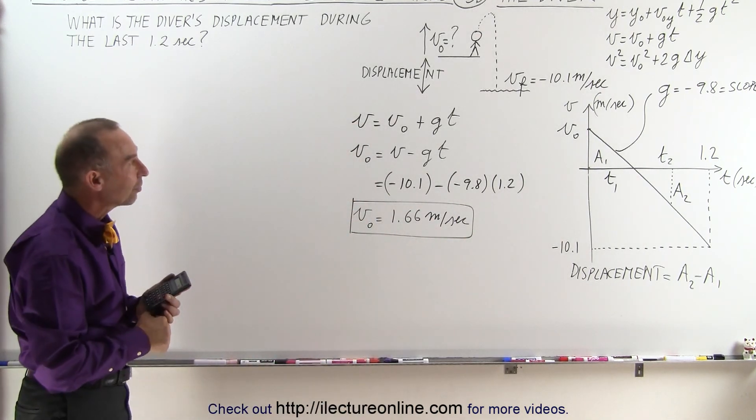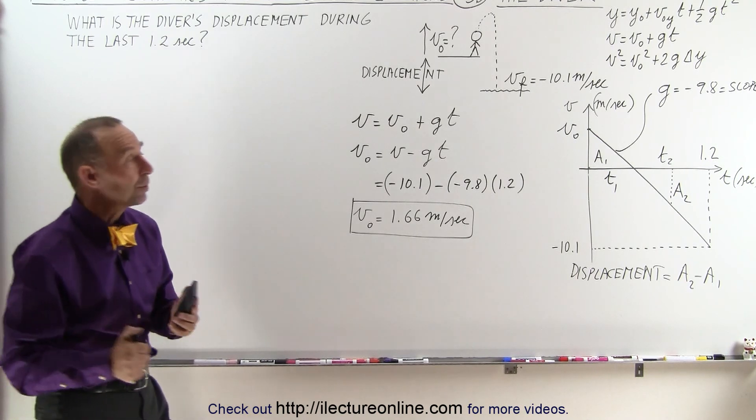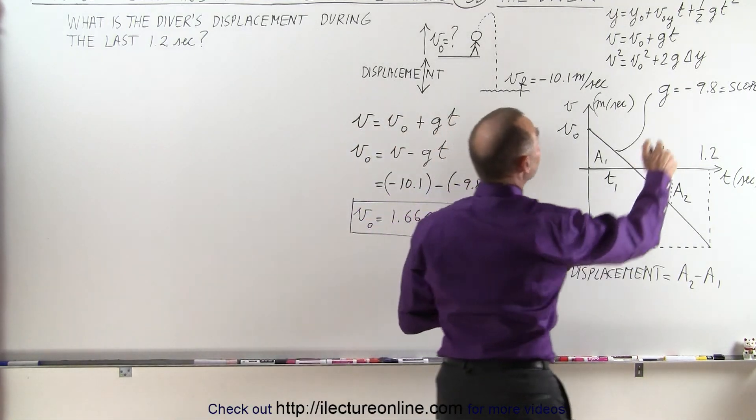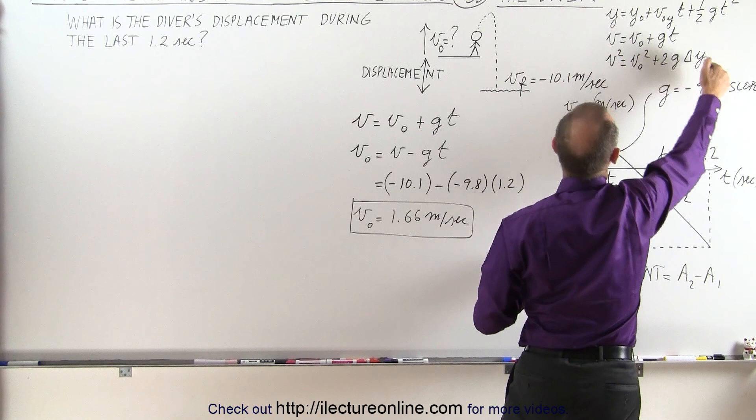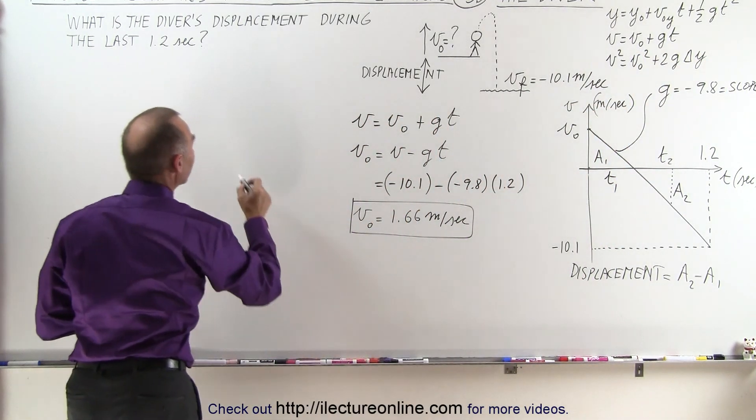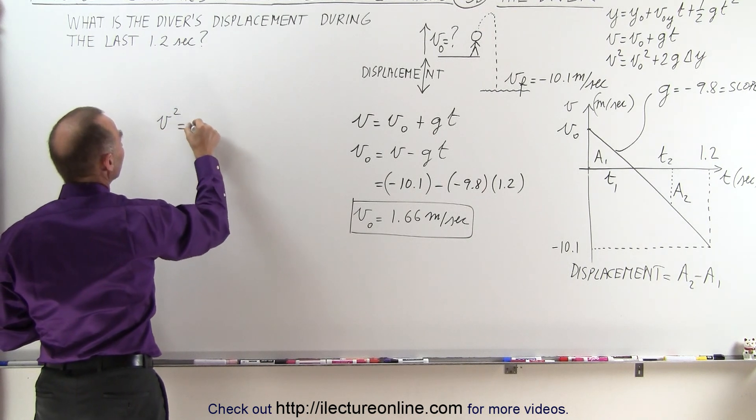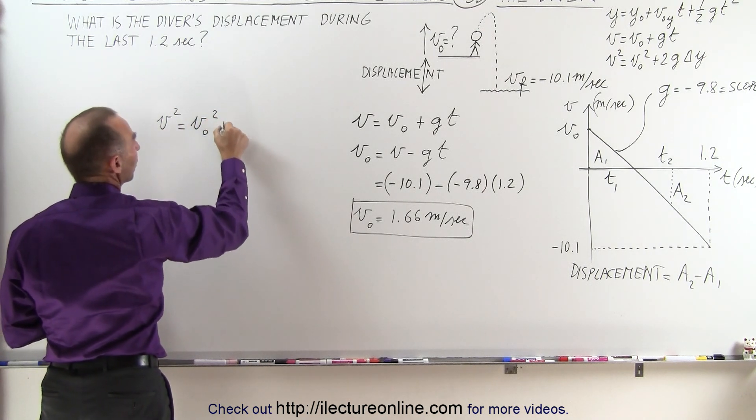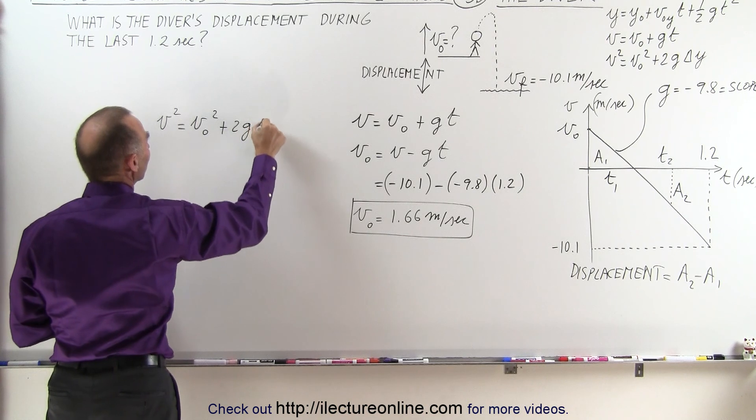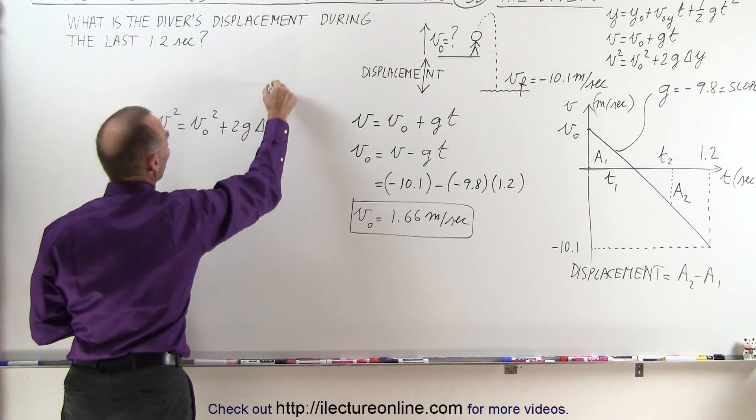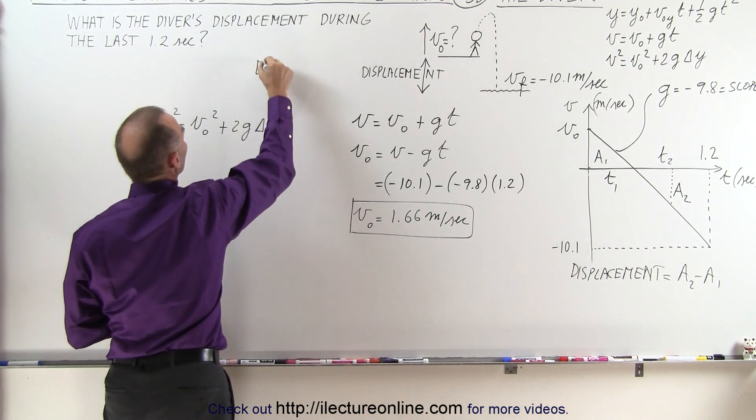Now we need to find the displacement, and the displacement can be found by finding the delta y here in this third equation. So what we can do is we can write that v squared, that's the final velocity squared, is equal to v initial squared plus 2g times the delta y. And the delta y here will be our displacement.